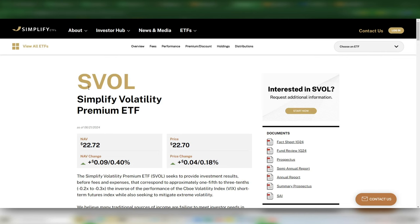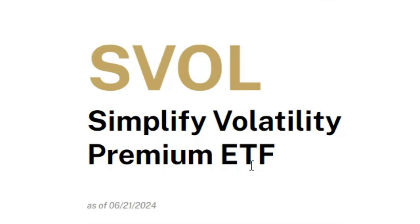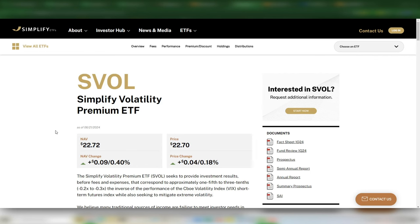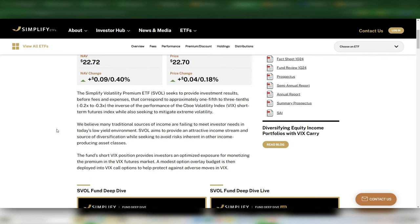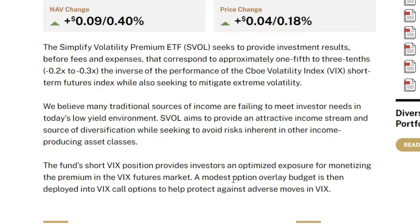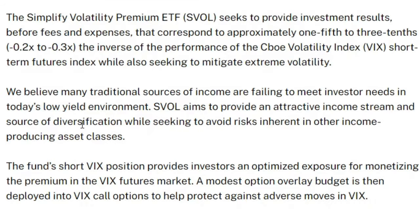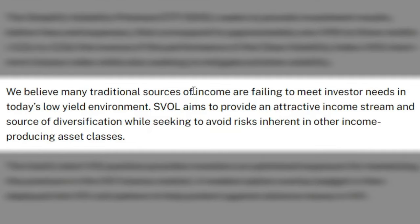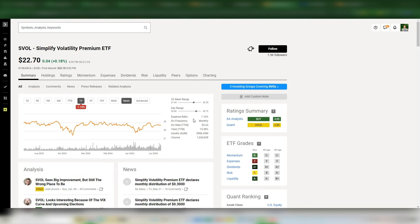The next ETF is SVOL — Simplify Volatility Premium ETF. They offer the highest yield but also the highest expense ratio, and they also employ an options contract strategy including an options overlay and call option strategy. Their pitch is that many traditional sources of income are failing to meet investor needs in today's low yield environment, and SVOL aims to provide an attractive income stream and diversification while avoiding risks inherent in other income-producing asset classes.